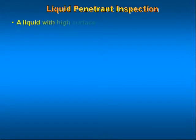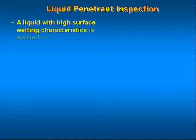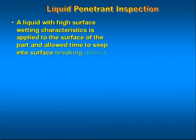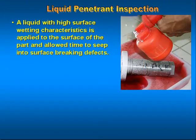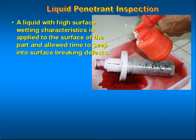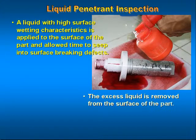Liquid penetrant inspection. The steps used to perform liquid penetrant inspection are as follows. Step one: a liquid with a high surface wetting characteristic is applied to the surface of a part, and the penetrant is allowed time to seep into surface defects. Step two: the excess liquid is removed from the surface of the part.